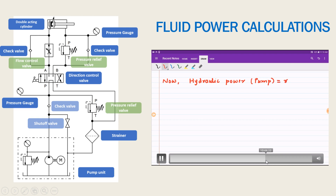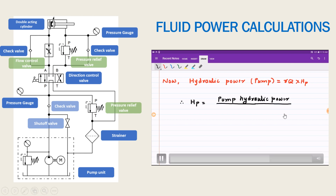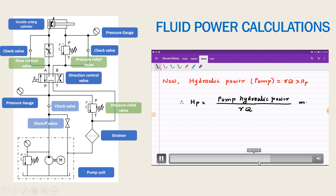Pump hydraulic power equals gamma times q times h. In terms of pump head hp, we can say that pump head hp equals pump hydraulic power divided by gamma times q. We have simply transferred gamma times q to the other side, giving the head developed by the pump.